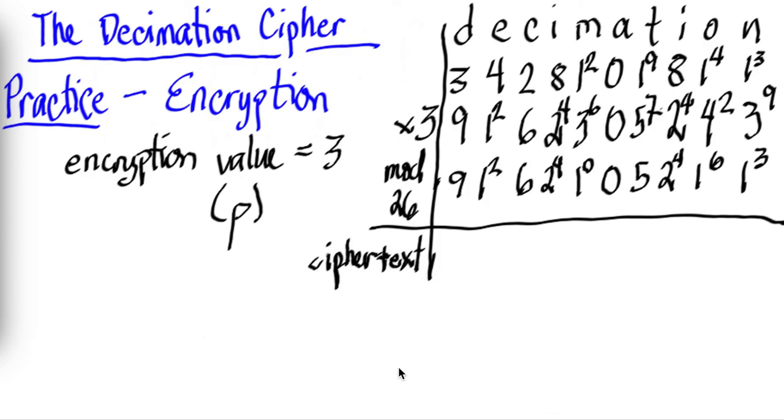So what will be our ciphertext? Making use of that table that we have, you will see that it will be J, M for 12, G for 6, Y for 24, K for 10, A for 0, F for 5, Y for 24, Q for 16, and N for 13, and that will be the ciphertext for this example, which is the word decimation.